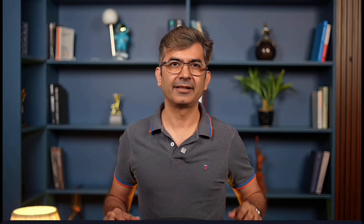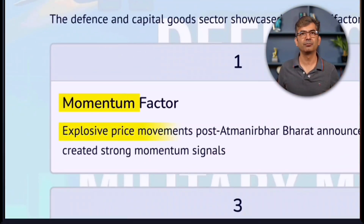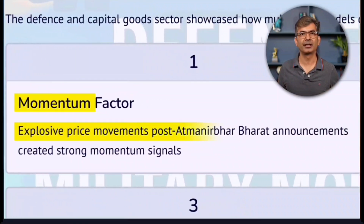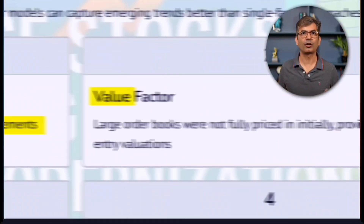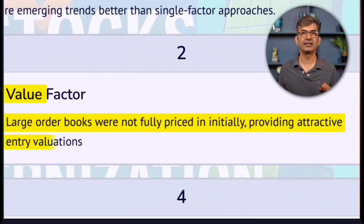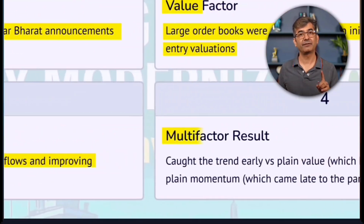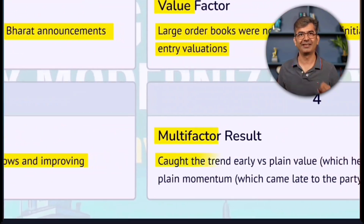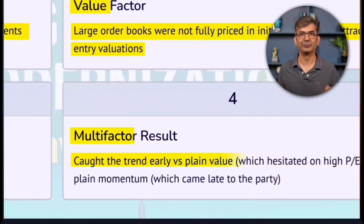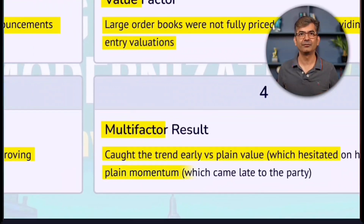Second case study: Defense and capital goods in 2022 and 2023. Momentum was explosive post Aatmanirbhar Bharat announcements. Value showed order books not fully priced in initially, so decent entry valuation. Quality showed strong cash flows for PSUs like BEL and HAL. The multi-factor model caught the trend early, versus plain value which hesitated or plain momentum which came late.